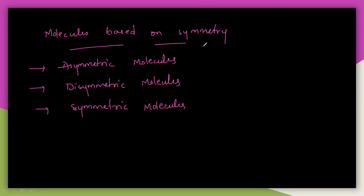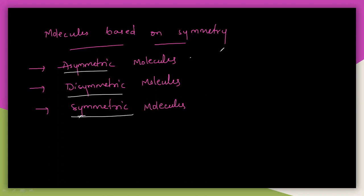Generally, molecules are classified into three types based on symmetry: symmetric molecules, asymmetric molecules, and disymmetric molecules. The word 'symmetric' means it is having symmetry — it indicates that it has symmetric elements.